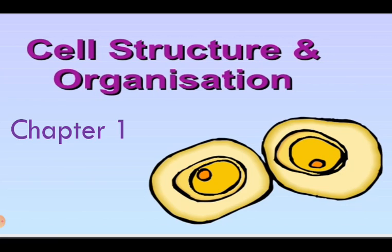Bismillahirrahmanirrahim. Assalamu alaikum. I am your biology teacher and this is your biology class. We are going through our first chapter: cell structure and organization. Yesterday we studied a very important process that occurs in living organisms, and that was cell differentiation. Cell differentiation is a process through which cells develop special structures or lose certain structures, which enable them to carry out their specific function. We have gone through all the detail of this process.